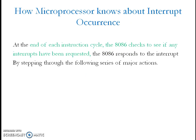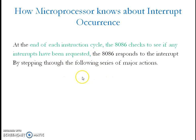How does the 8086 microprocessor know about an interrupt occurrence? At the end of each instruction cycle, the 8086 checks to see if any interrupts have been requested. If an interrupt is requested, it is going to perform the following sequence of actions.